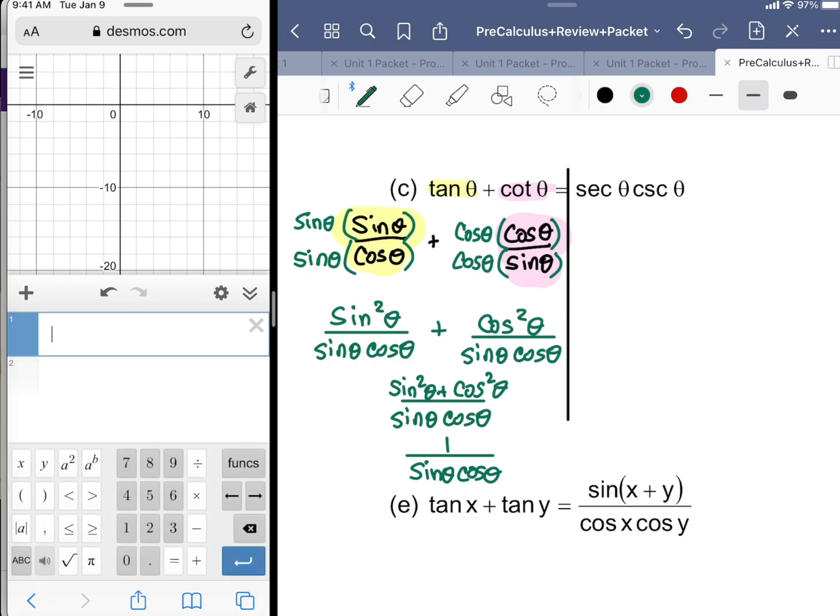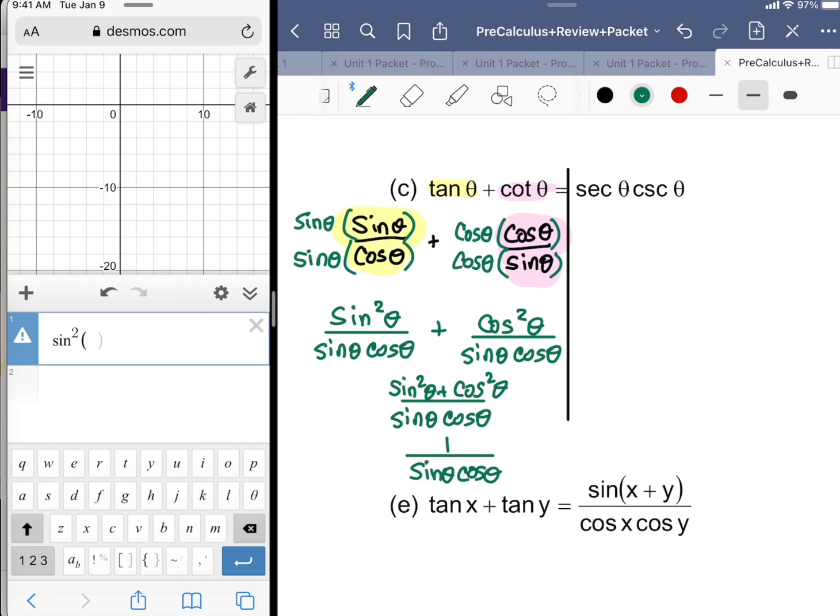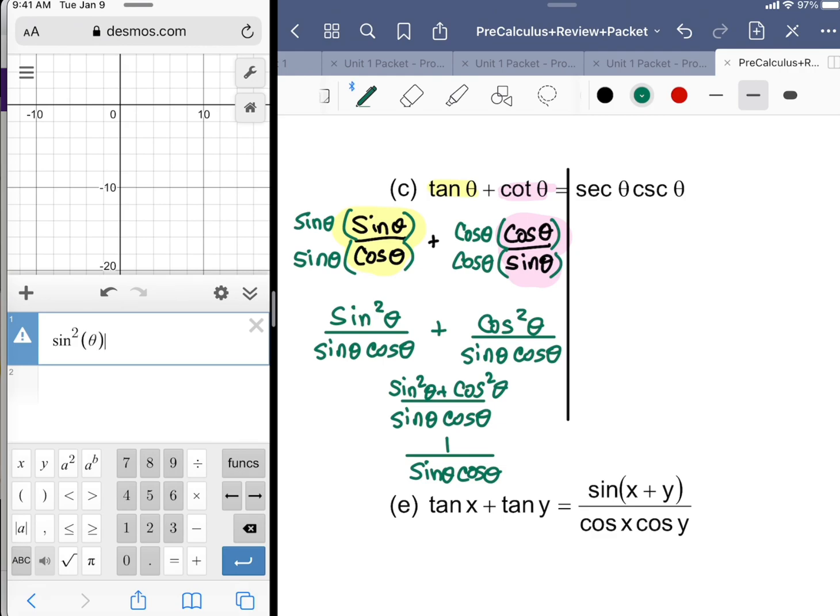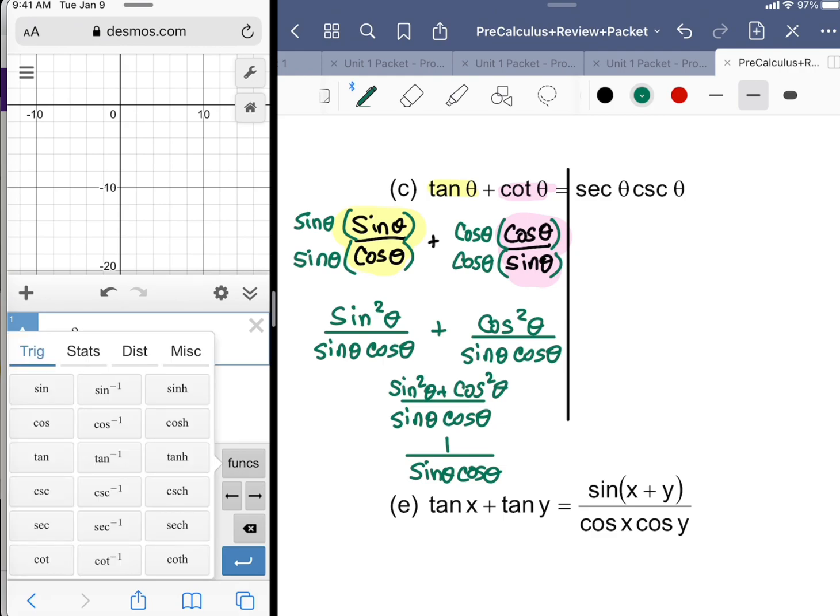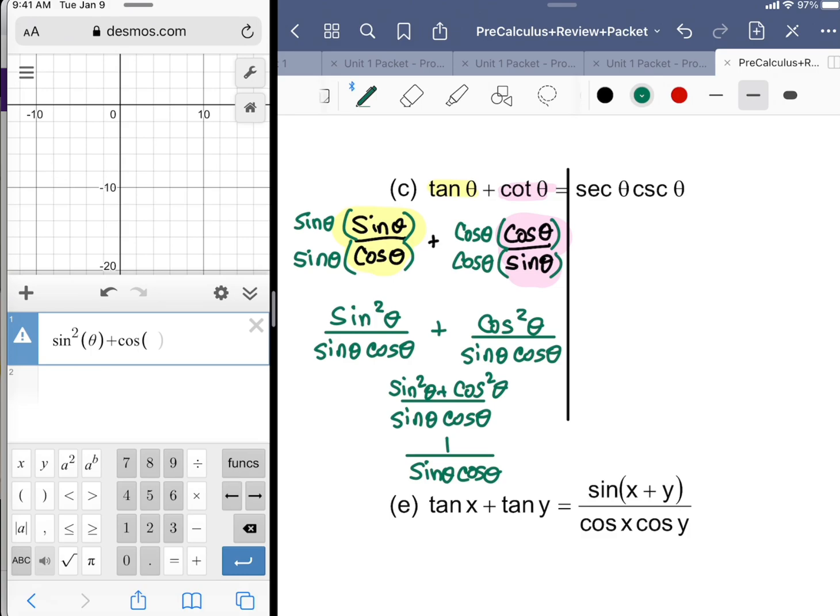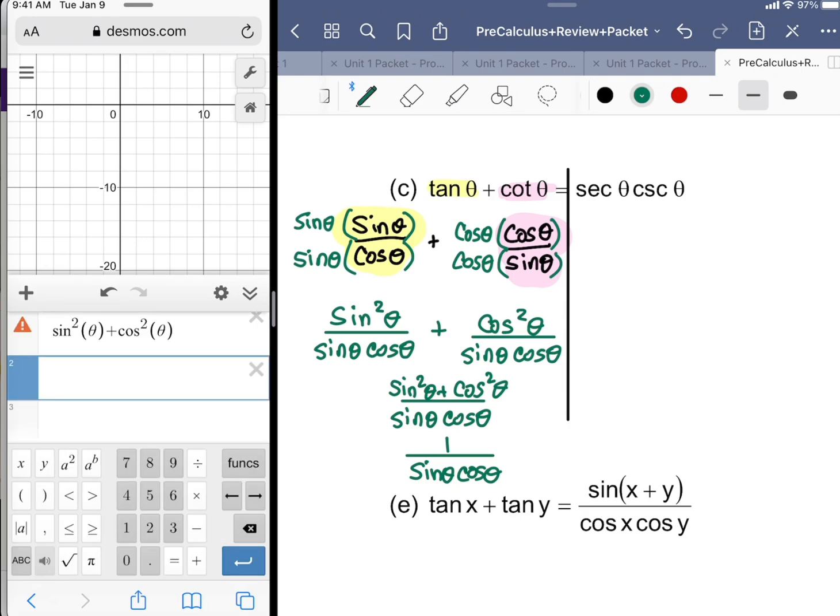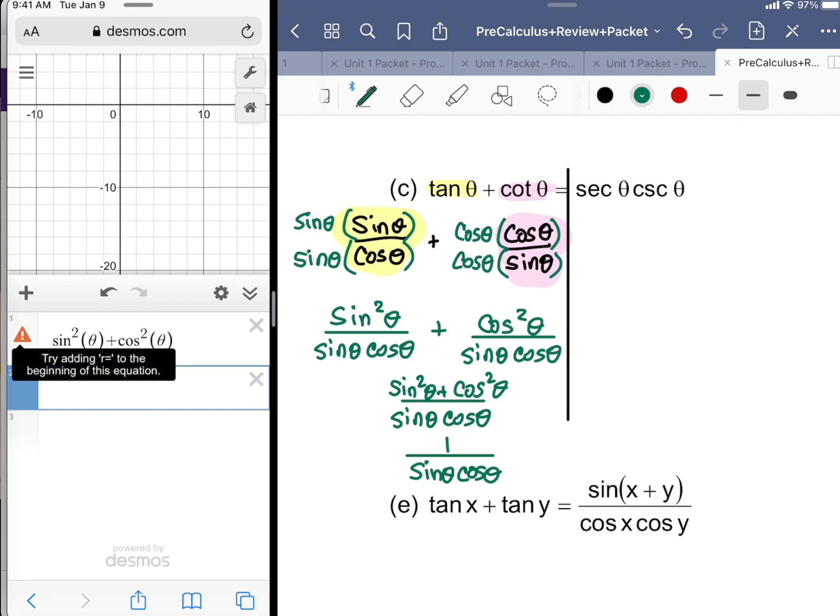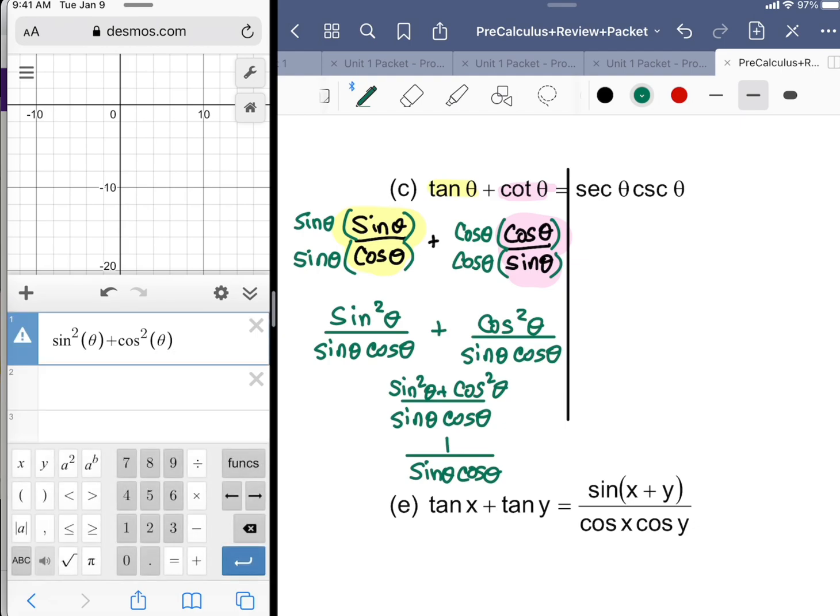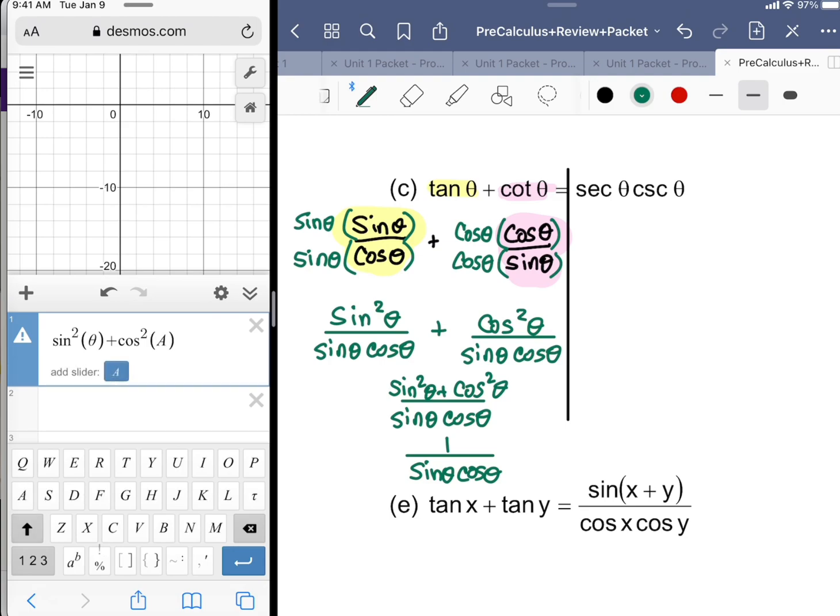I can type in sine squared of theta plus cosine squared theta. Sometimes it'll give you an error. If you get an error, it'll give you a suggestion. You could also switch up the variable and create a slider because theta is a default variable—it's not thought of as a constant.